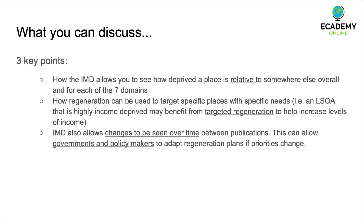Three key things you can discuss: First, how the IMD allows you to see how deprived a place is relative to somewhere else, for each of the seven domains. Second, how regeneration can be used to target specific places with specific needs — for example, areas with high income deprivation may benefit from targeted regeneration to increase income levels. Third, the IMD allows changes to be seen over time between publications, enabling governments and policymakers to adapt regeneration plans if priorities change. These three key points, discussed with examples, will help establish your authority and achieve full marks.